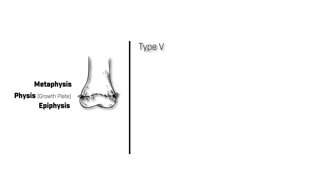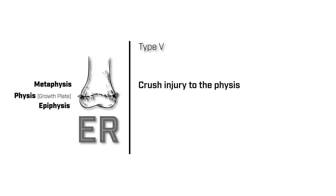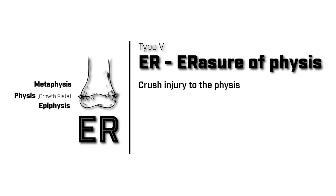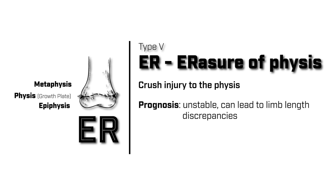Type 5 Salter-Harris fracture is a crush injury to the growth plate. The letters E and R in our mnemonic represent this type, because you could think of this crush injury as an erasure of our growth plate. These fractures are often unstable and can lead to leg length discrepancies. Like type 4 Salter-Harris fractures, operative management should be considered.